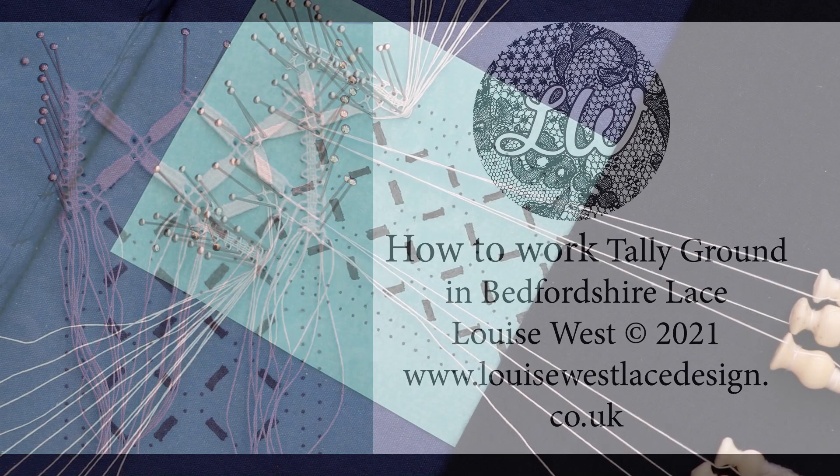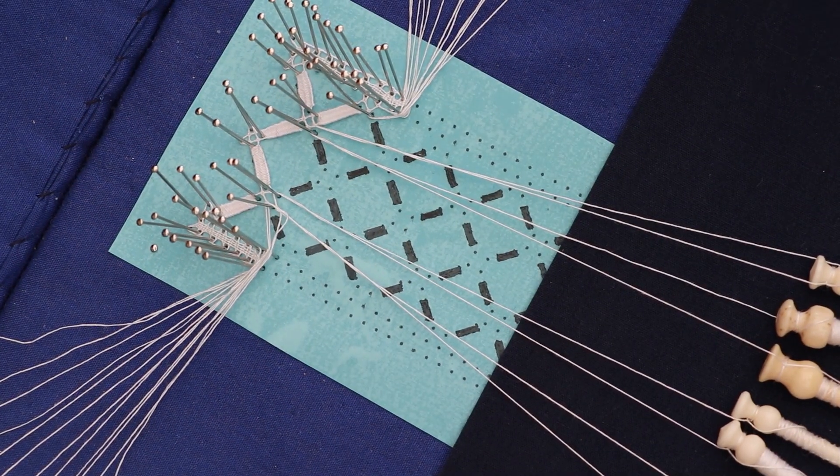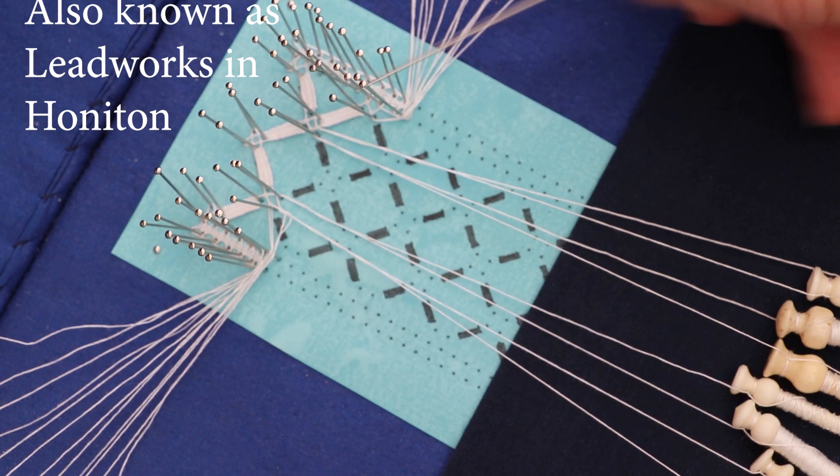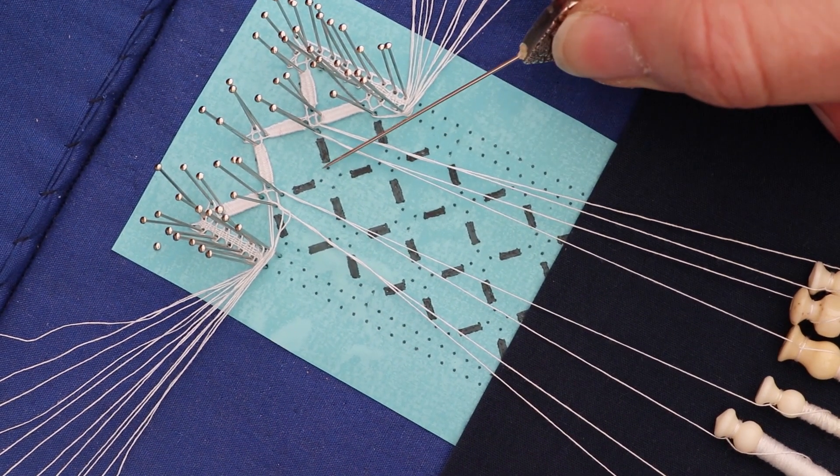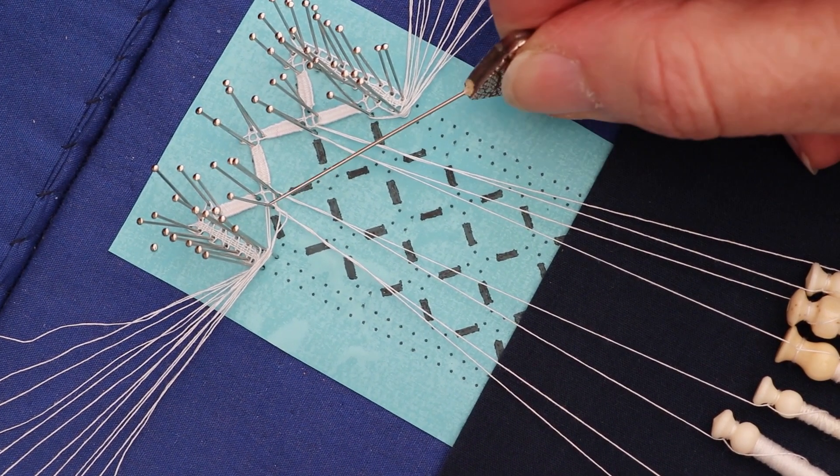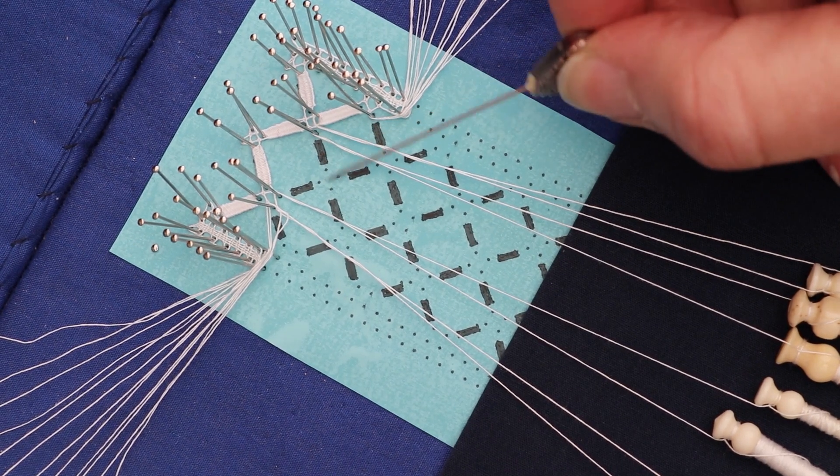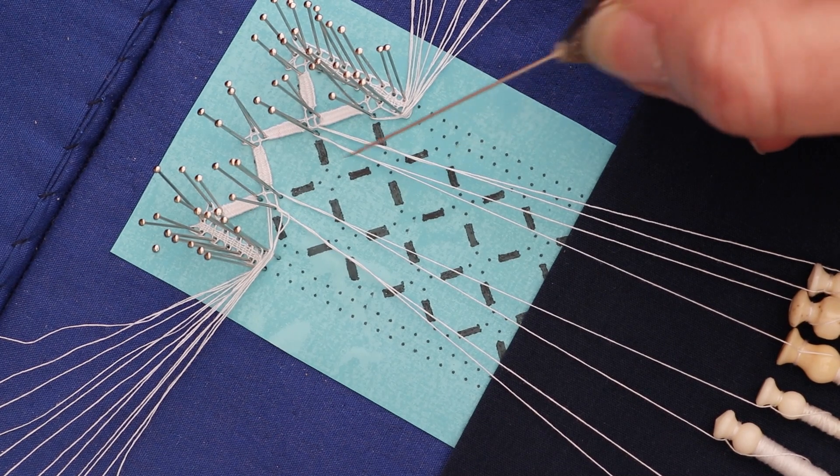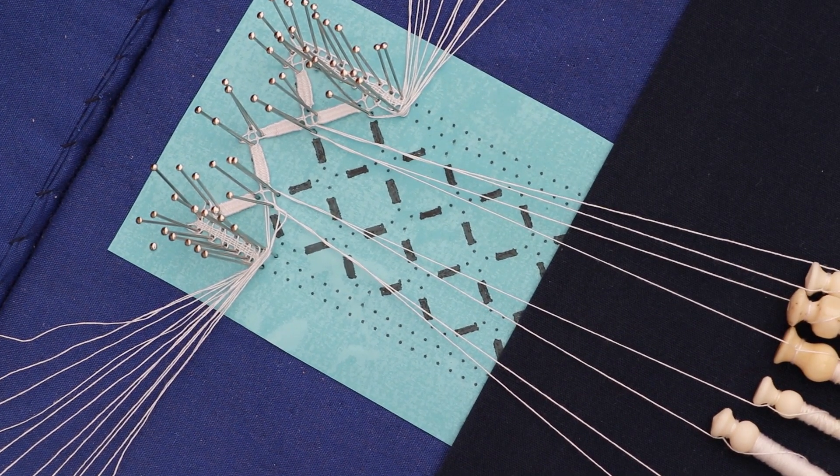Today I'm going to talk about Bedfordshire Square Tally Ground and how to make the ground so that the tallies stay nice and square when you do the joins. The joins are around these four pins. You have two square tallies coming in and two coming out, and it's the join that can make or break the tally ground.